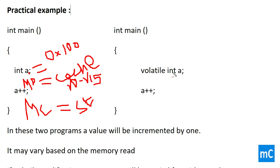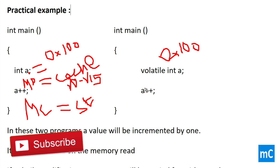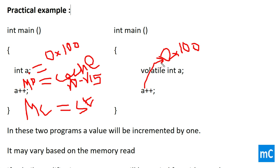In the second part, the integer `a` is declared with the qualifier volatile, and let us assume it is at the same address 0x100. Whenever it is accessed, it will read directly from this memory. Why? Because we specified the keyword volatile — it will not be cached or stored in a temporary memory. This is the real use of the volatile keyword.